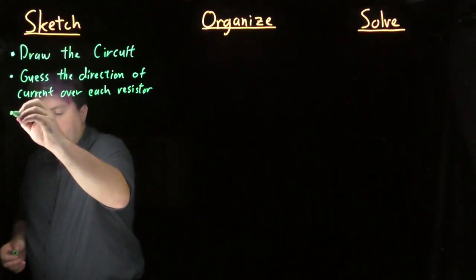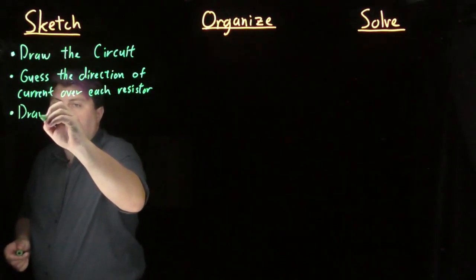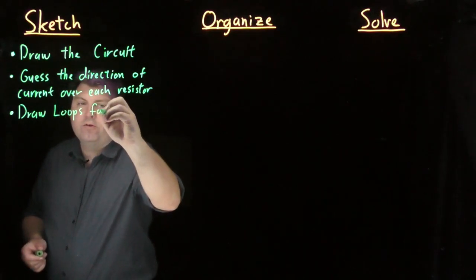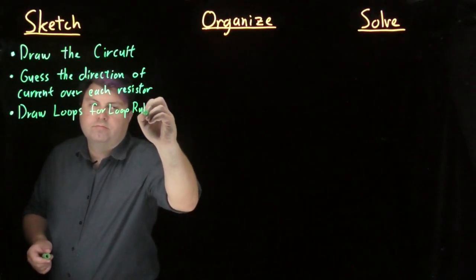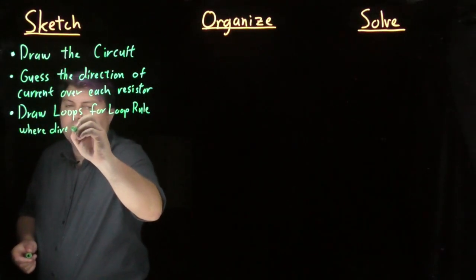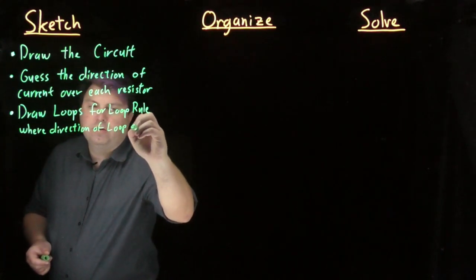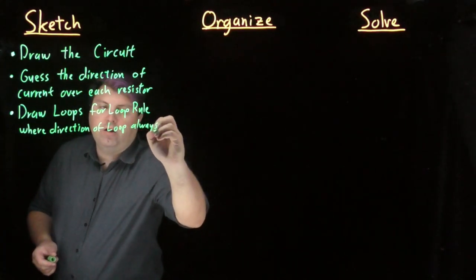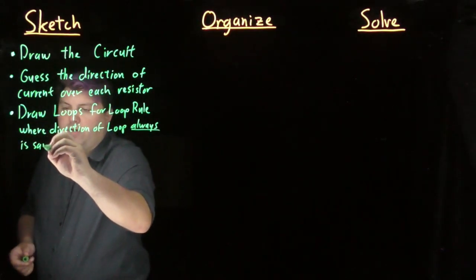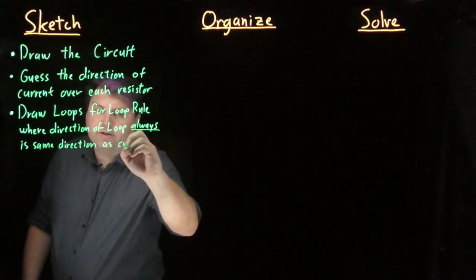And then once we do this, we want to draw loops for the loop rule, where the direction of the loop always is the same direction as the current.